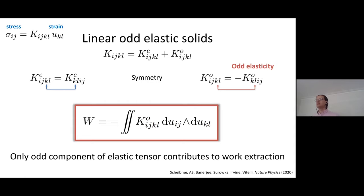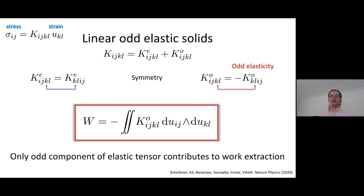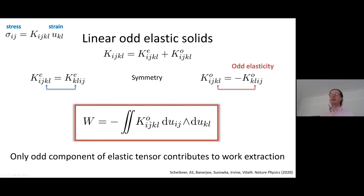This argument for work extraction can appear very abstract. As I showed earlier, it can lead to work extraction from a combination of two types of shear strains. In that case, there's a specific modulus — one of the odd elastic moduli — where you can evaluate this work extraction integral.